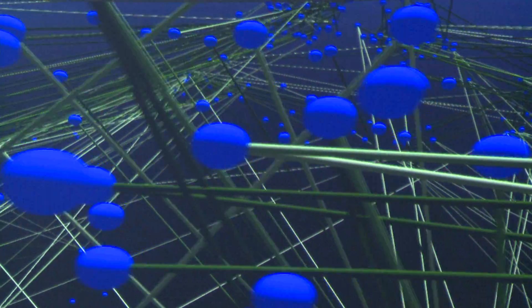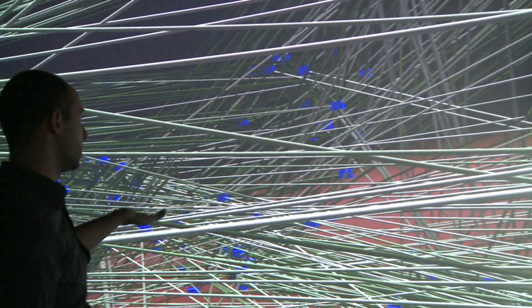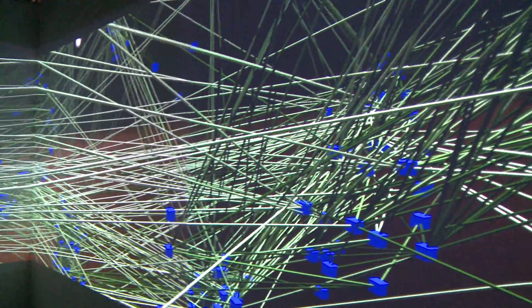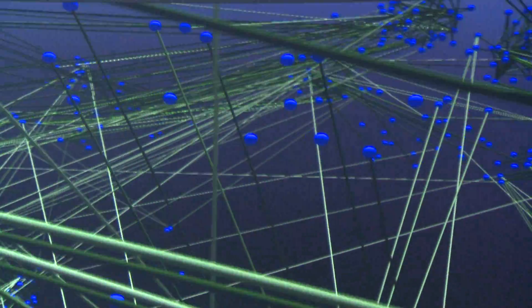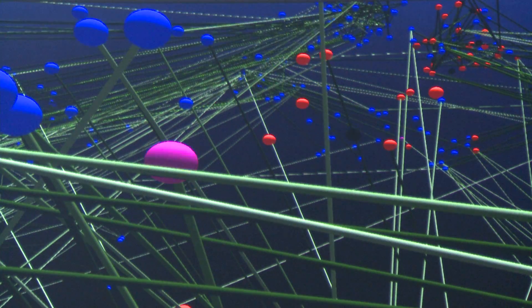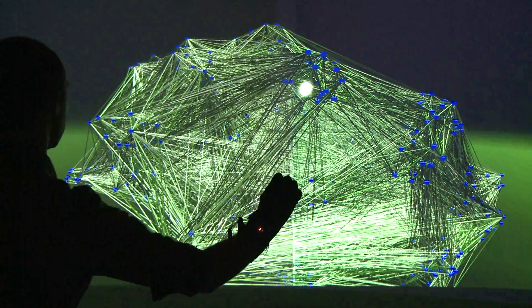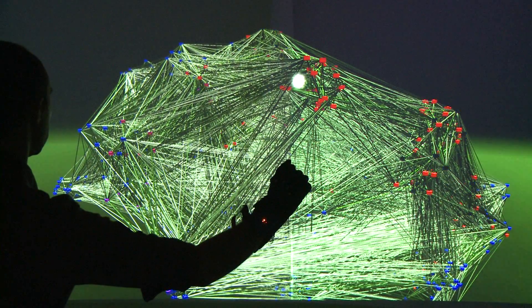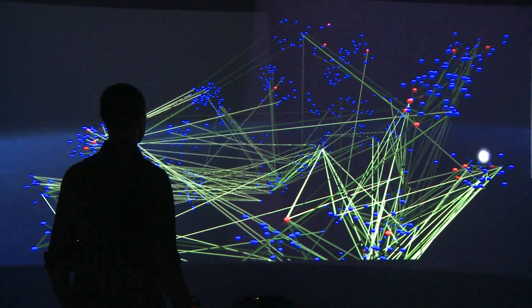The function of the brain is closely coupled to its structure, and for this reason we coupled the structural representation of the network with a real-time neuronal network simulator called IQR. This allows the user to stimulate specific areas and observe the resulting activation propagating through the network leading to an appreciation of structural and functional interaction.